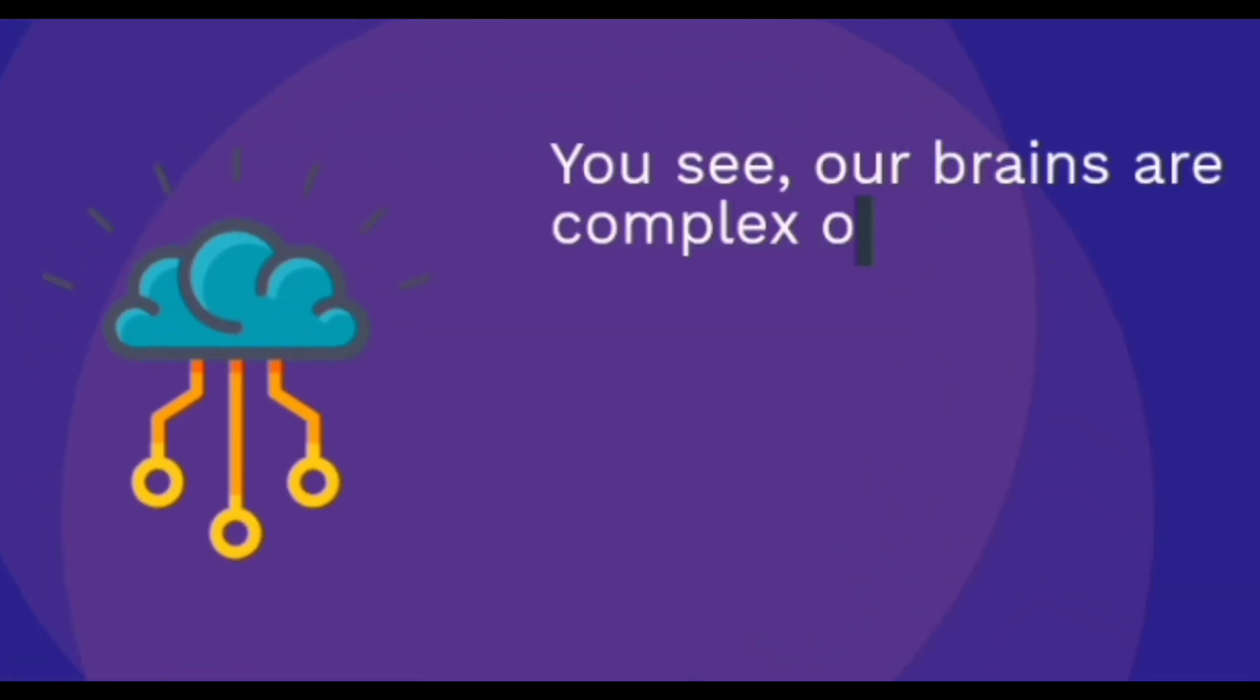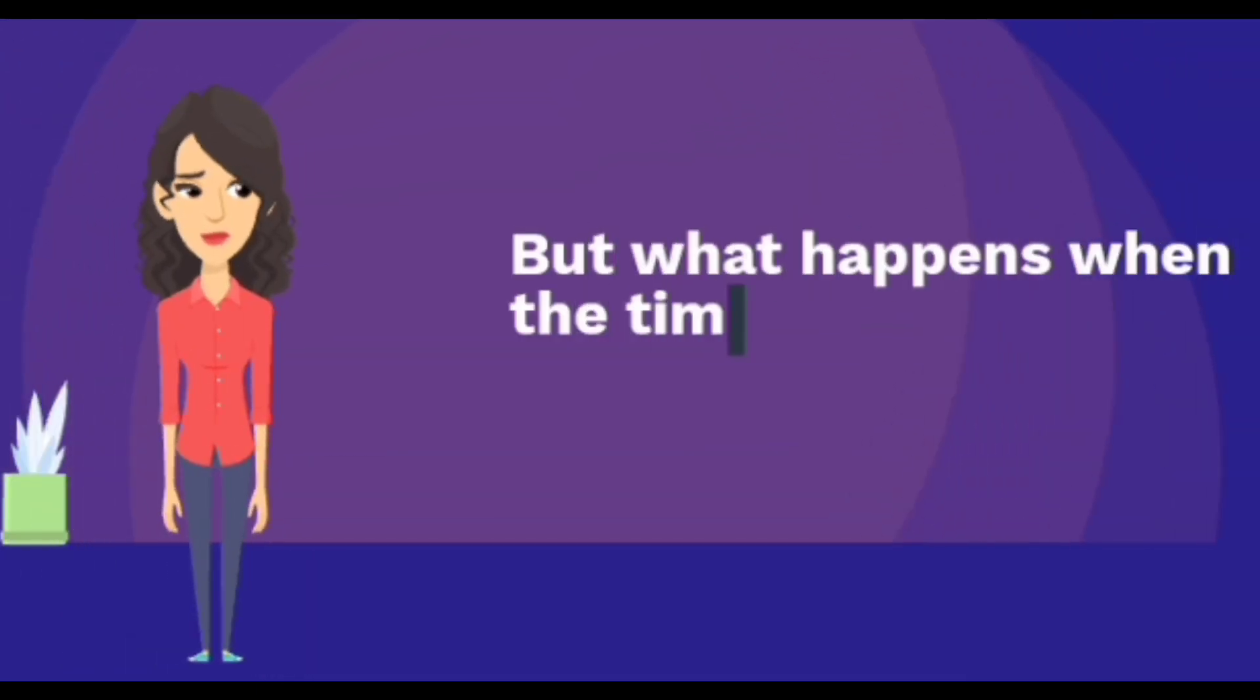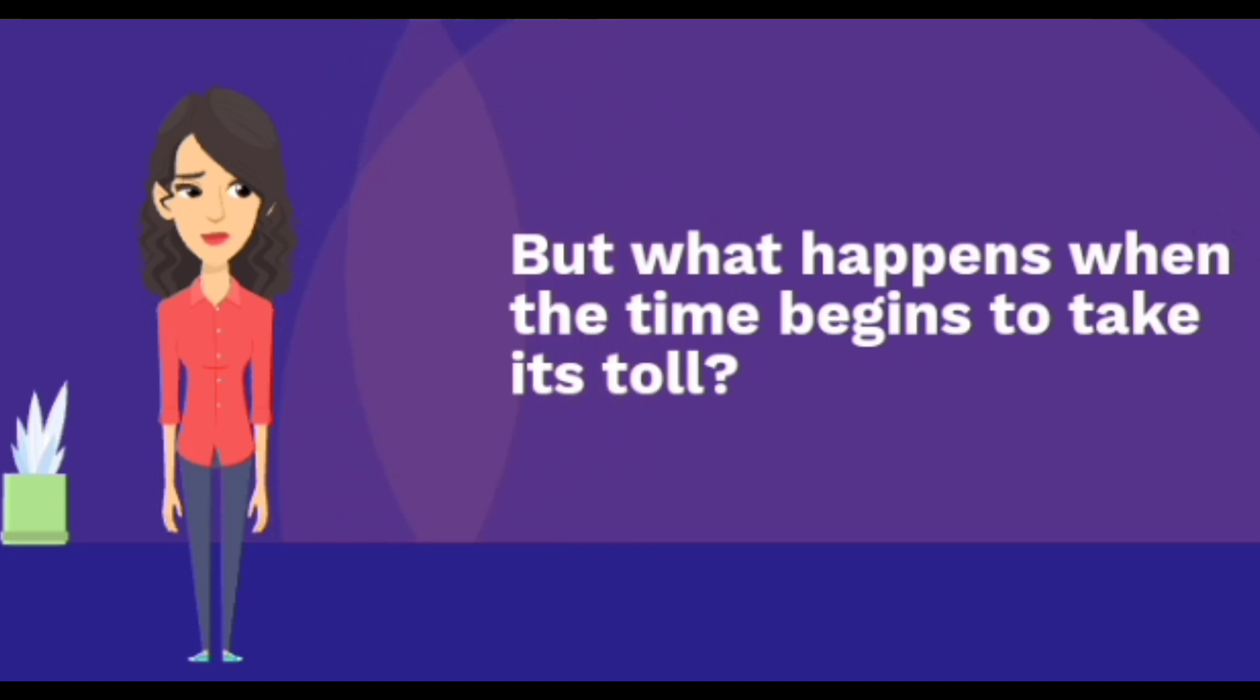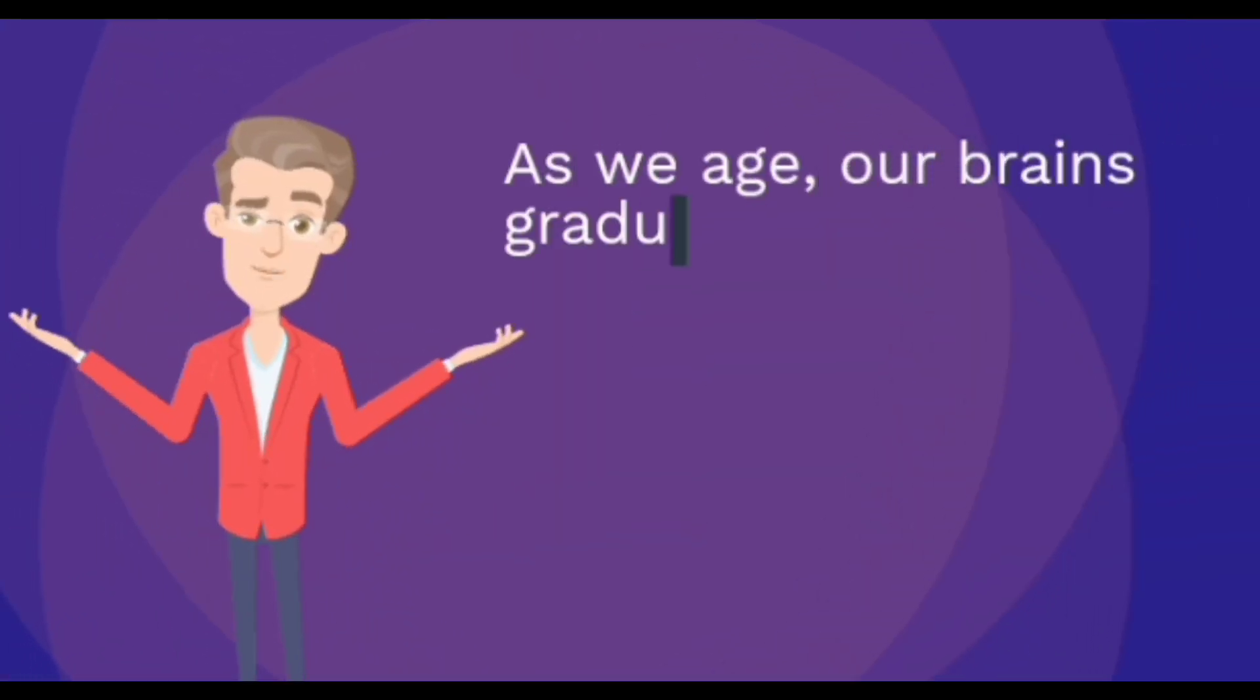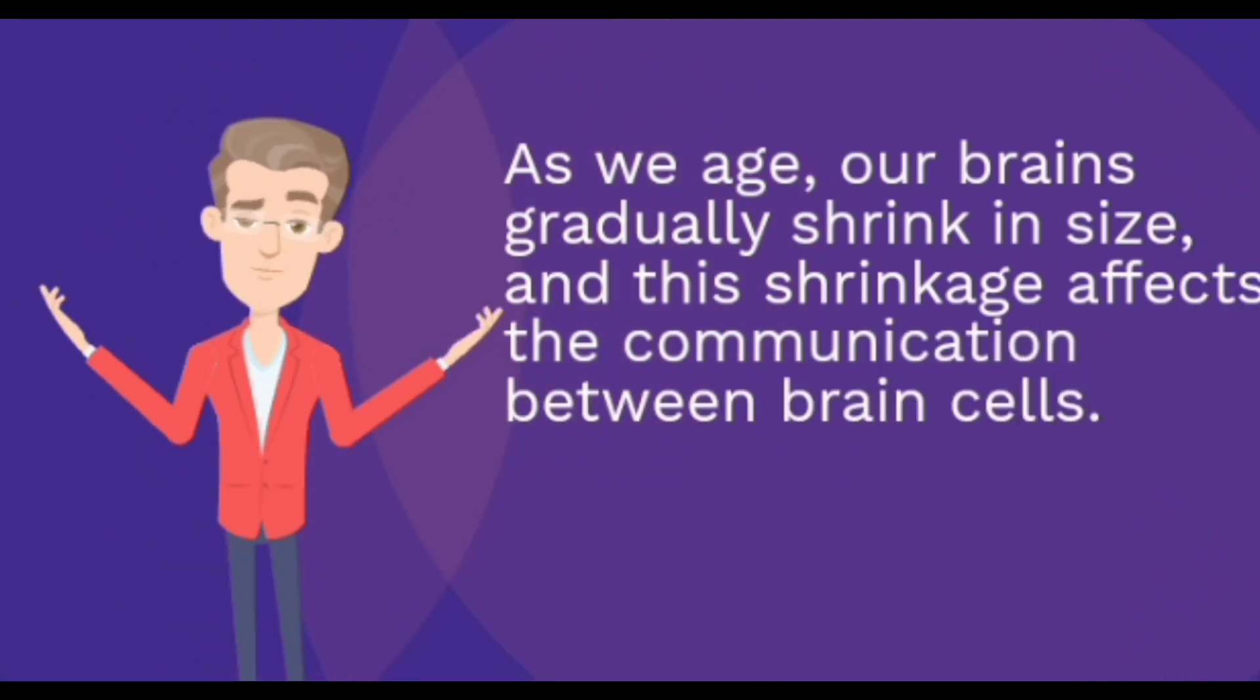You see, our brains are complex organs with billions of neurons constantly sending and receiving signals. But what happens when time begins to take its toll? As we age, our brains gradually shrink in size, and this shrinkage affects the communication between brain cells.